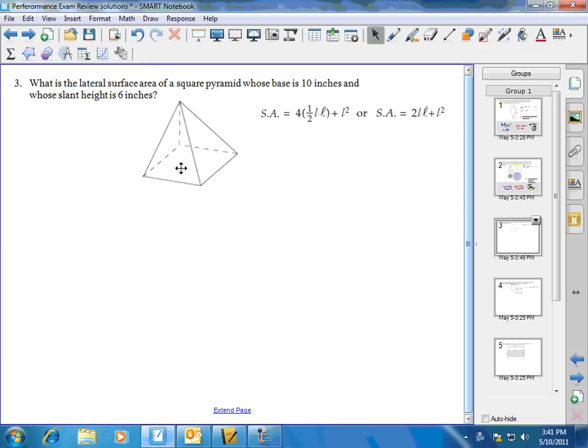Hi, let's look at number three for the performance exam review. We're asked in this question to find the lateral surface area of a square pyramid whose base is 10 inches and whose slant height is 6 inches.